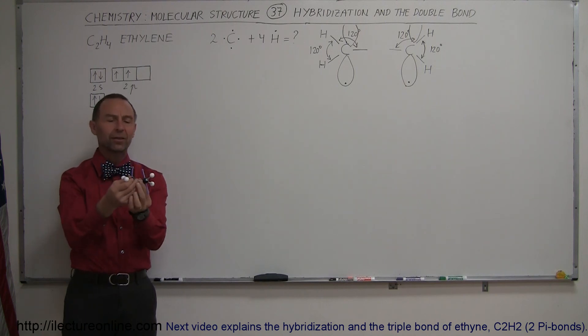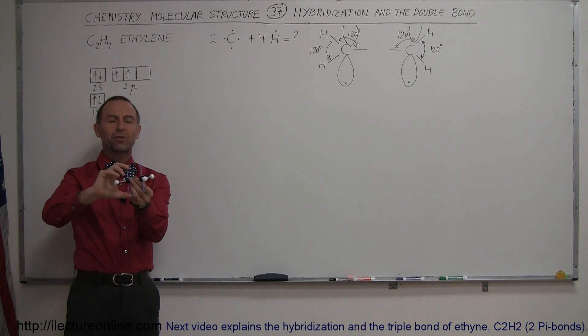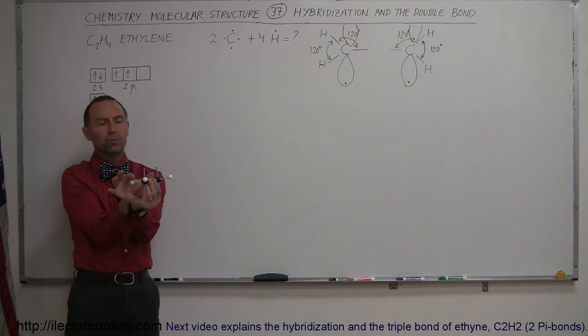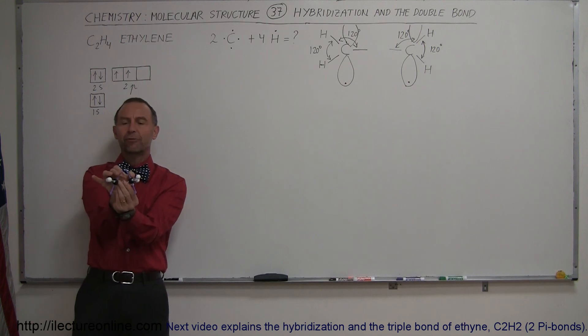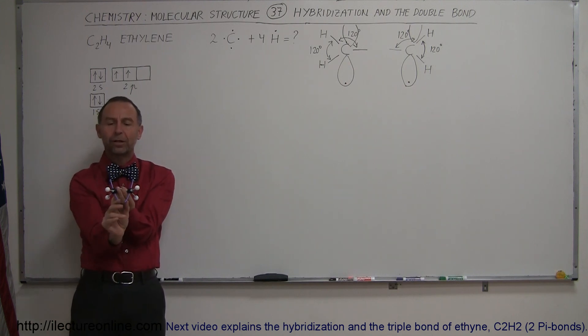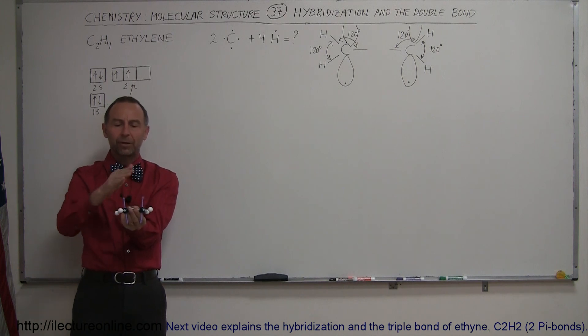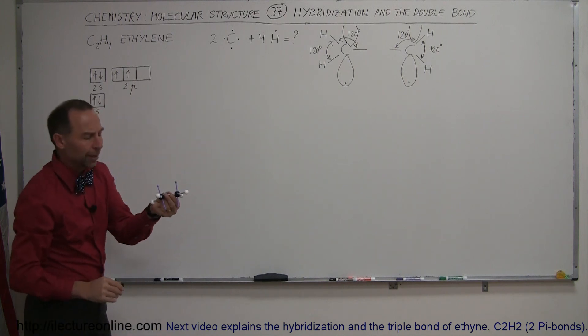But then we also realize that there is additional bonding taking place by the p orbitals right here, which then bend over like this towards one another and then form the pi bond, one above and one below there. That's a single pi bond, but two portions to make up that pi bond.